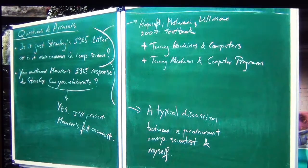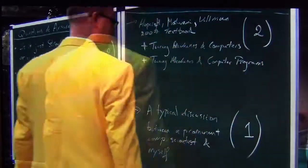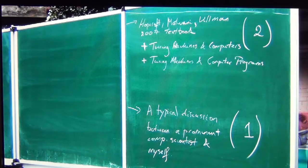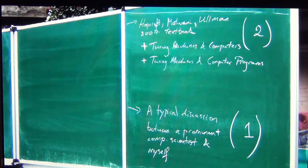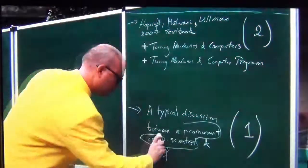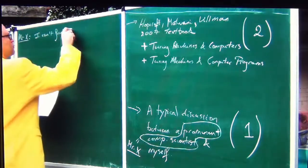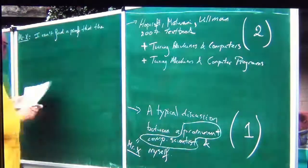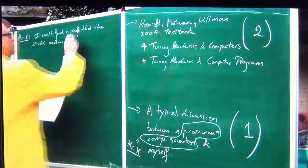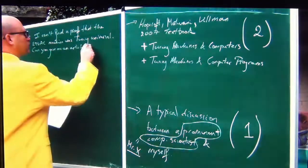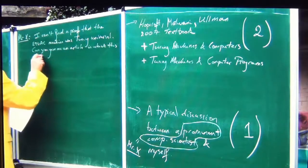Here is a typical discussion between a prominent computer scientist and myself, conveying the general flavour of reasoning in computer science today. Mr. X, this prominent computer scientist, tells me: 'I can't find a proof that the EDVAC machine, or some other machine of the 1940s–1950s, was Turing Universal. Can you give me an article in which this claim is proved? If not, I will have to look up the machine specifications myself and prove Turing Universality myself.'